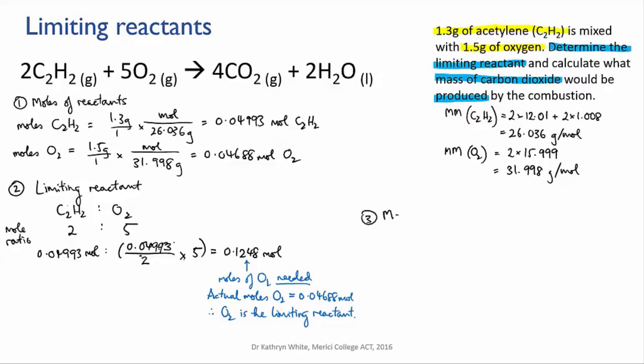So step three is to calculate the amount of carbon dioxide formed. I know my limiting reactant, that's oxygen, and that's going to determine how much of the CO2 is formed. So I need to use the mole ratio to work out the moles of product and then do a mole mass conversion to find the mass of product.